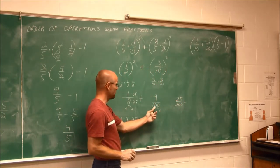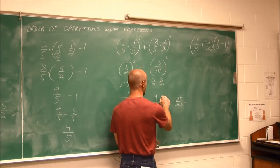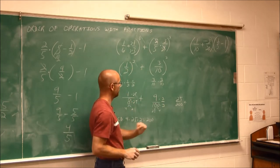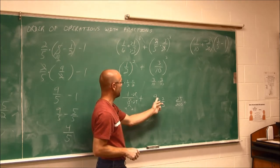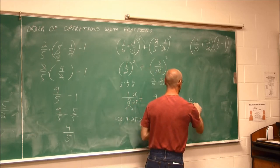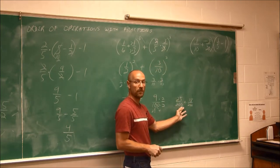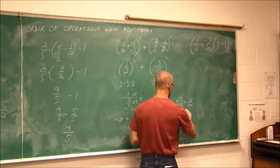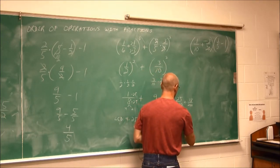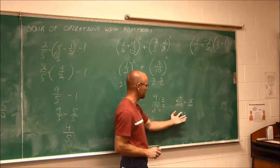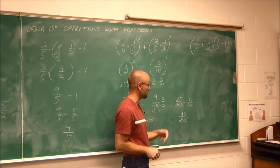Plus, what do I have to do to make this 200? I have to multiply it by 2 over 2. That's my fancy form of 1. 9 times 2 is 18, and 2 times 100 is 200. Now they have a common denominator. I can add them. 25 and 18 is 43 two hundredths. And there are no common factors. So this is not going to reduce. That's our answer, 43 two hundredths.